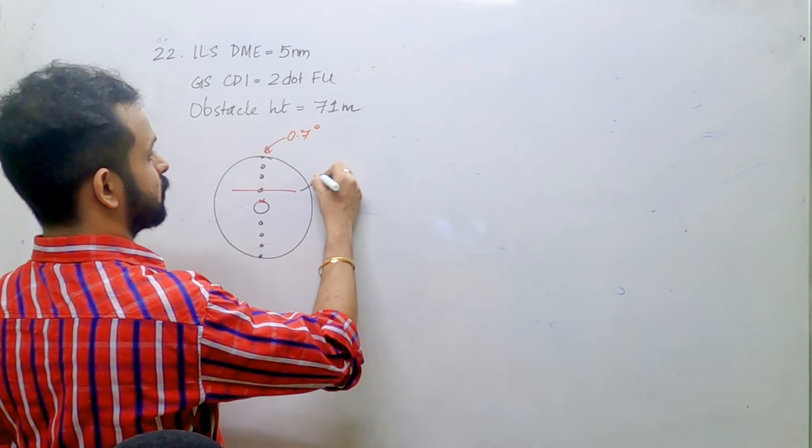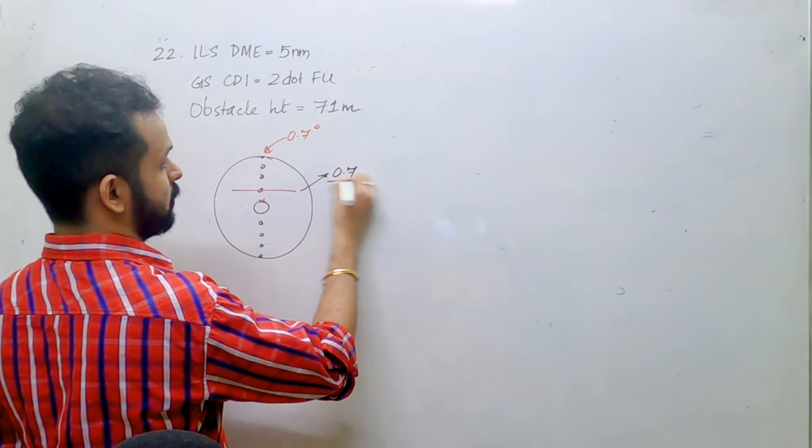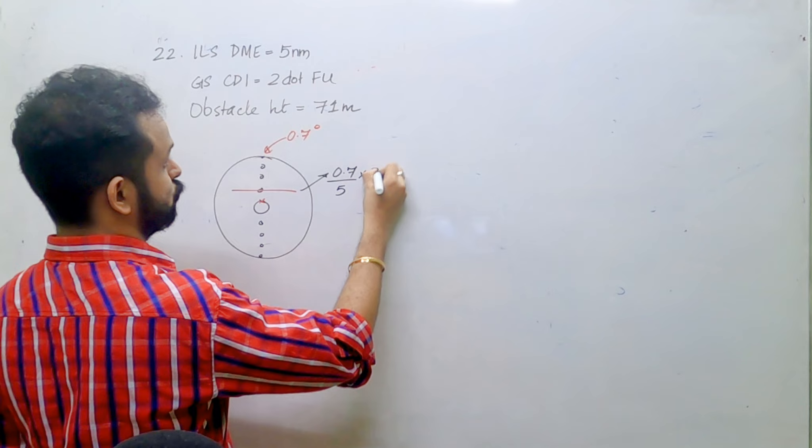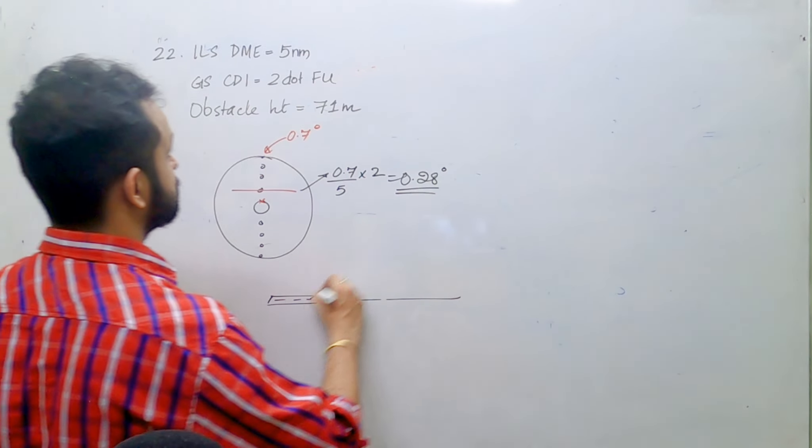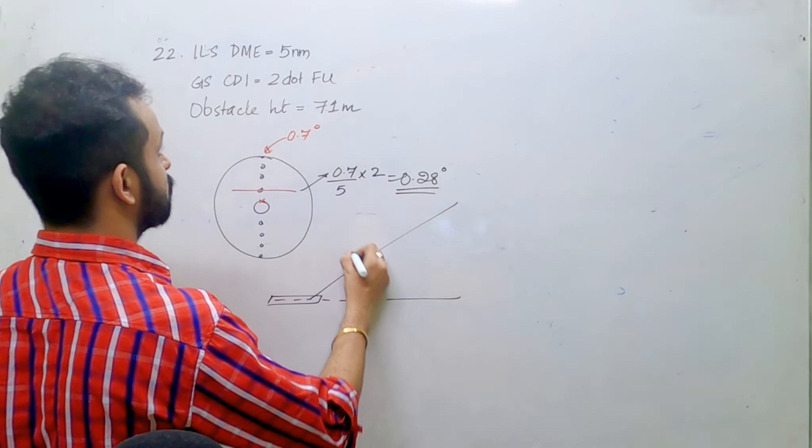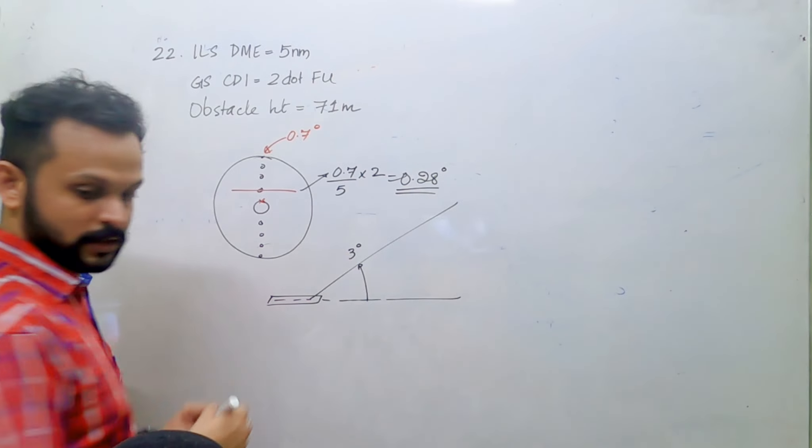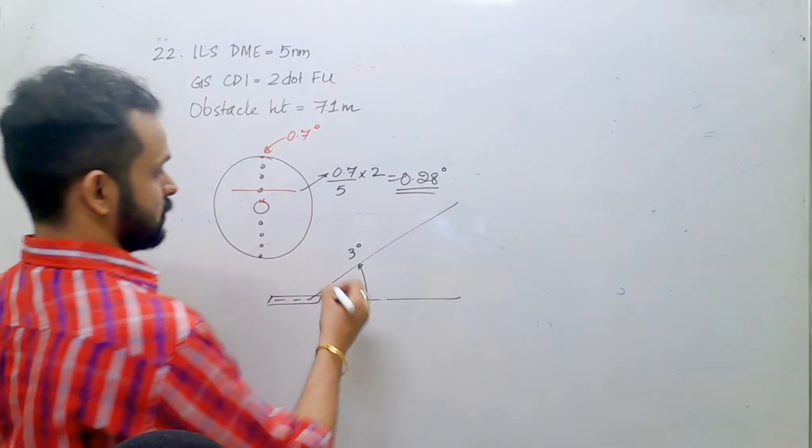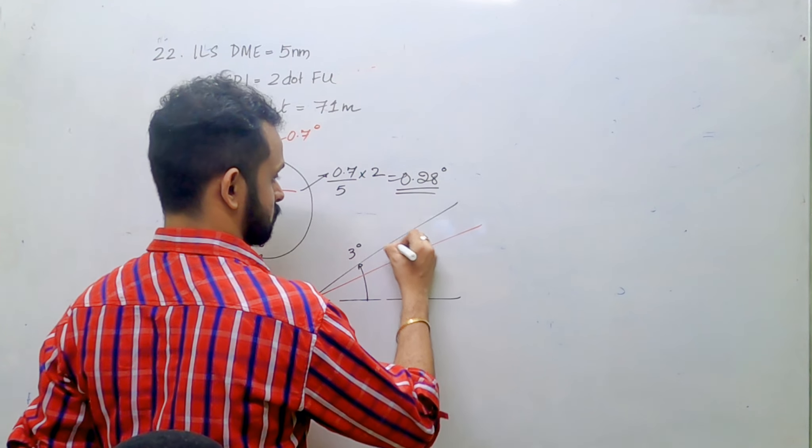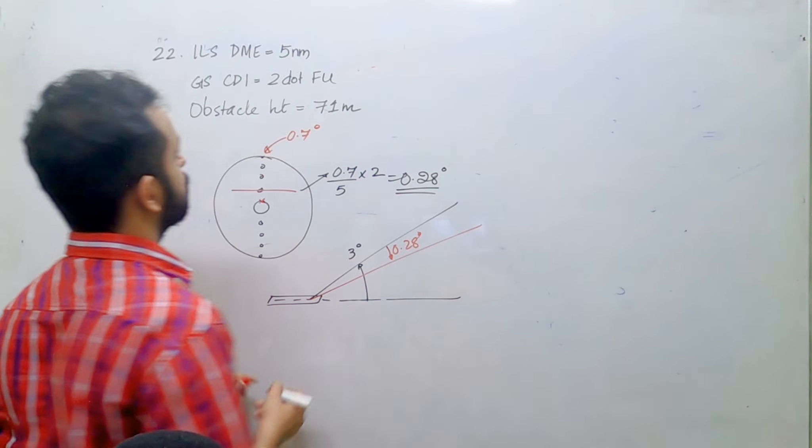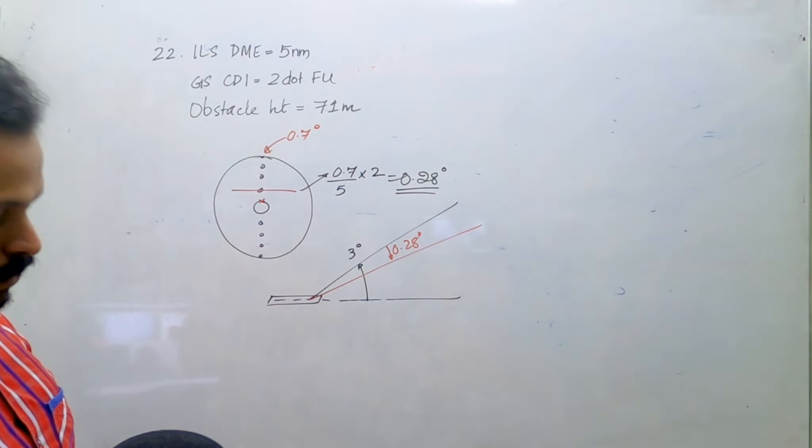So this line is 0.7 divided by 5 into 2. Since nothing is mentioned we are considering a three degree glide slope and you're below the required glide slope by 0.28 degrees.